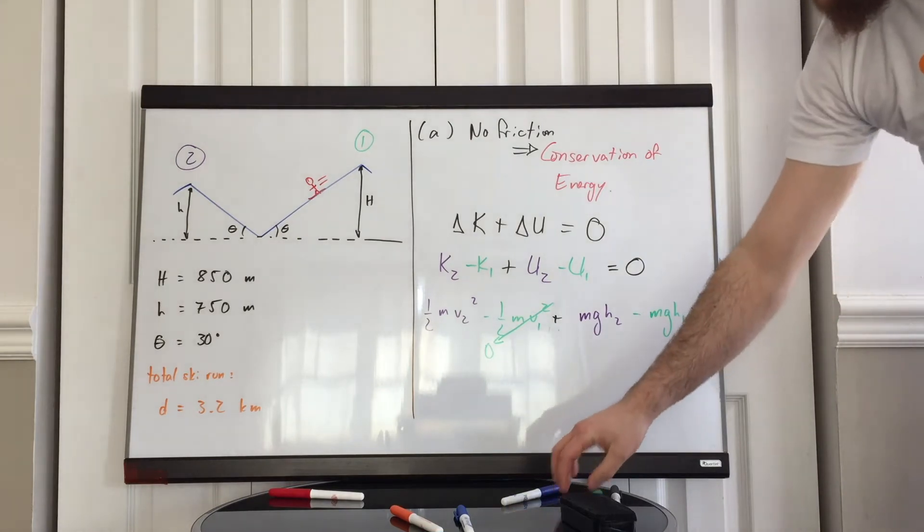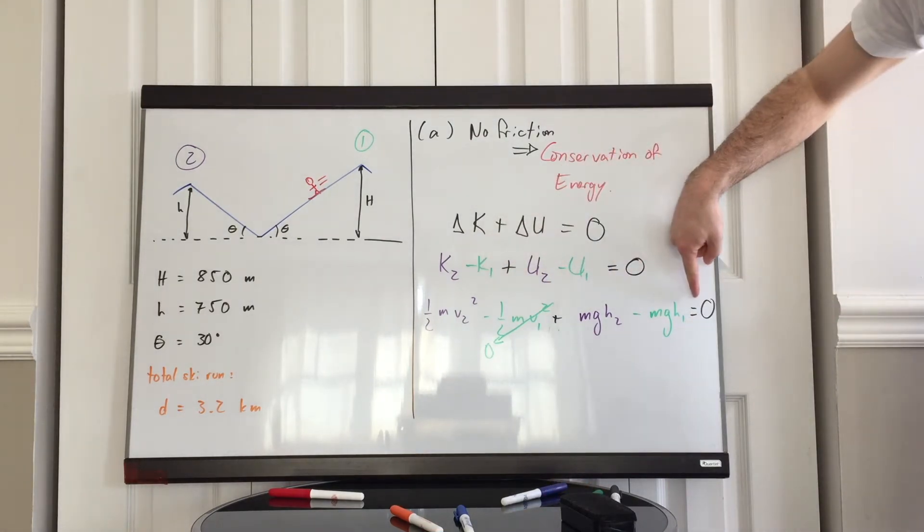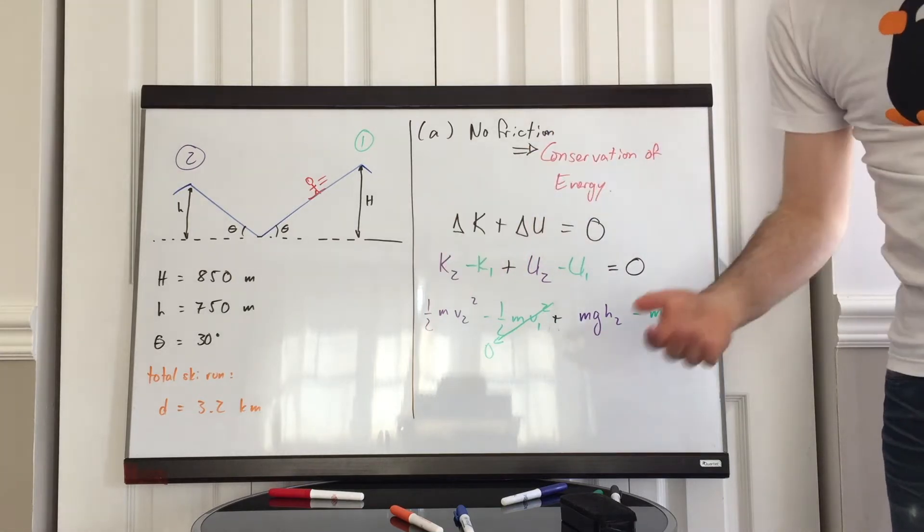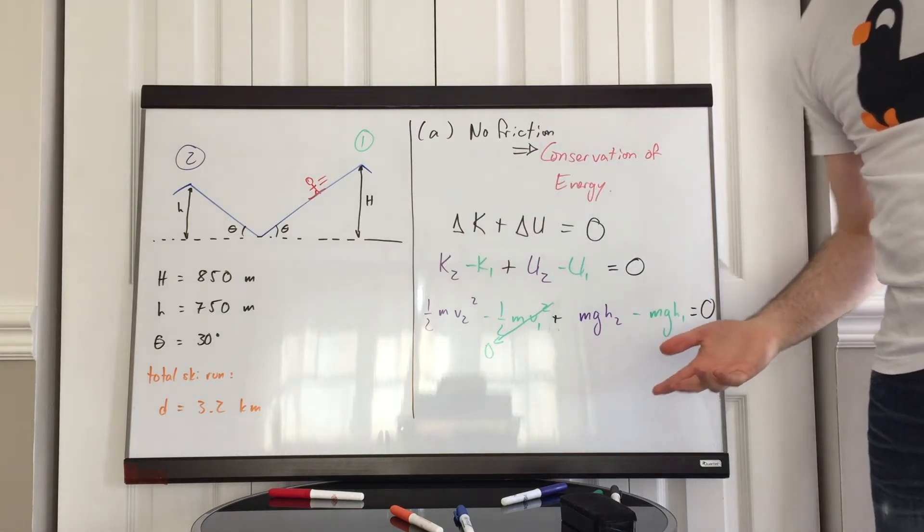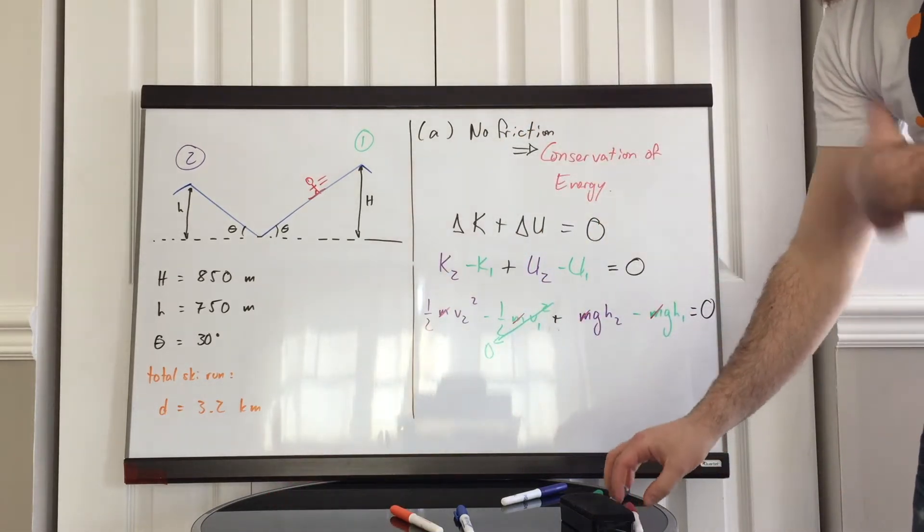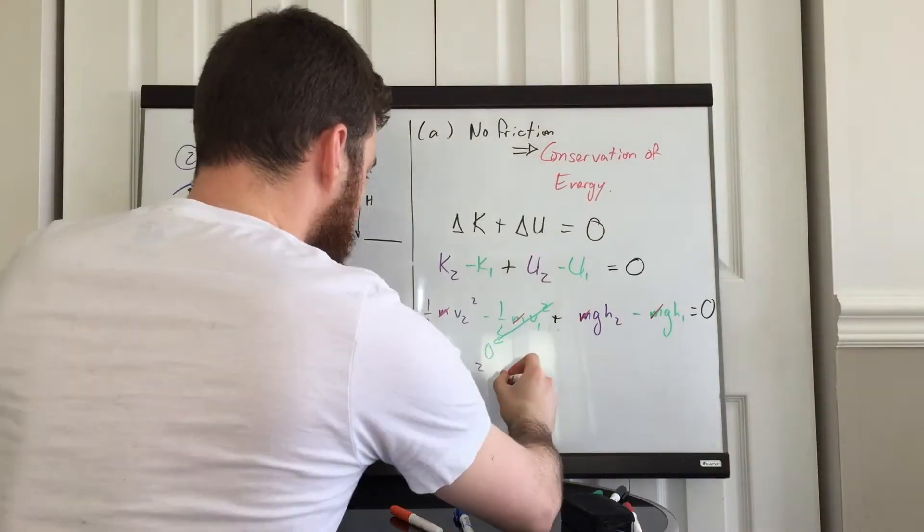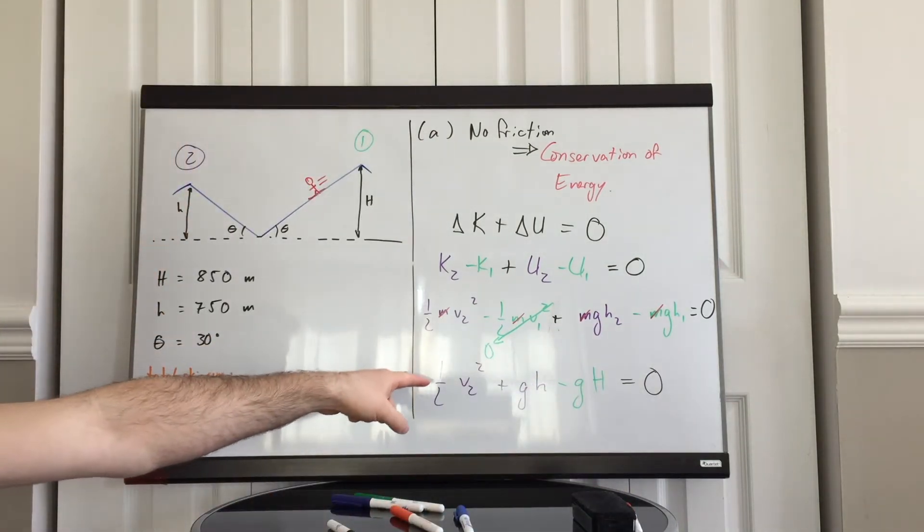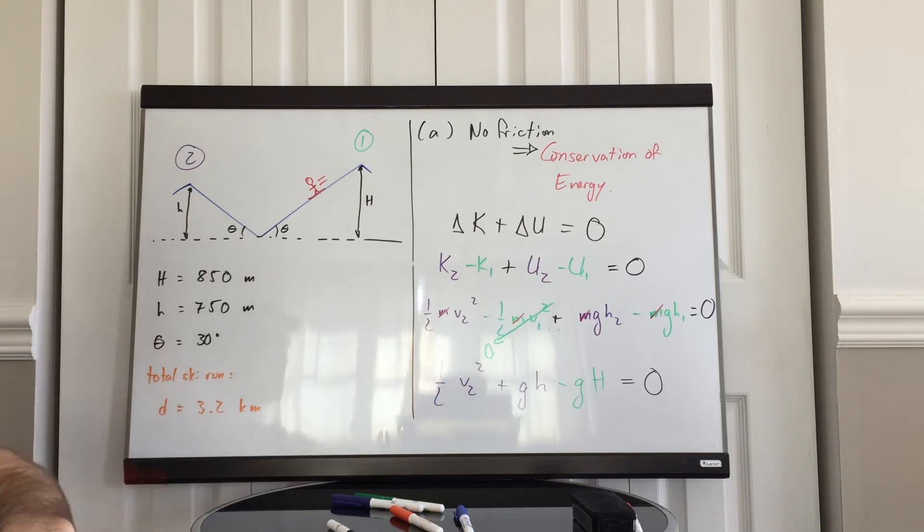Then all of this left hand side is equal to zero and we have the term m appearing in all three terms. It cancels away. We can divide both sides of the equation by m and it disappears. So we can rewrite this as: 1 half v2 squared plus g small h minus g big H. All of that is equal to zero. And then we solve for v2 and we plug in our numbers and we get an answer.